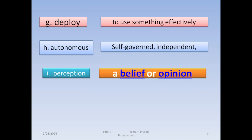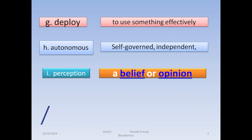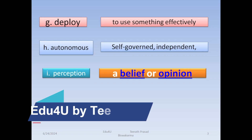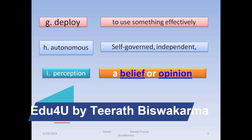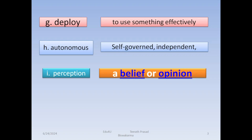'Autonomous' means self-governed or independent. 'Perception' means a belief or opinion — so that would be perception, what one believes.